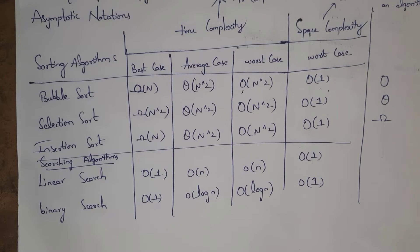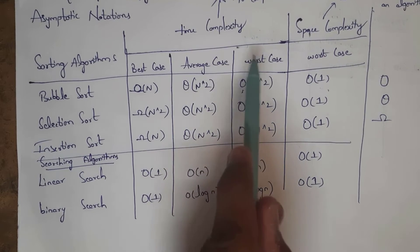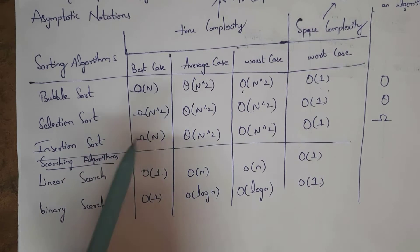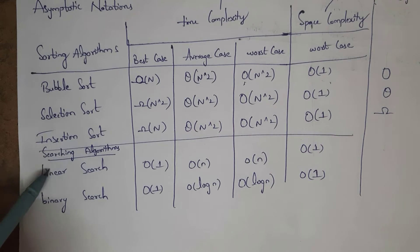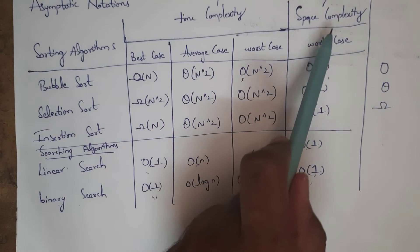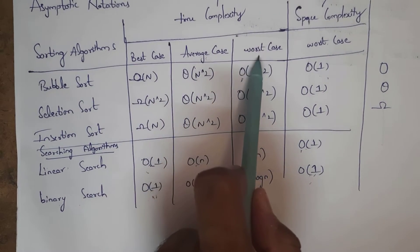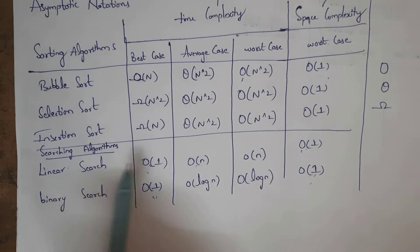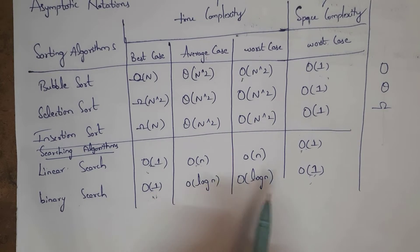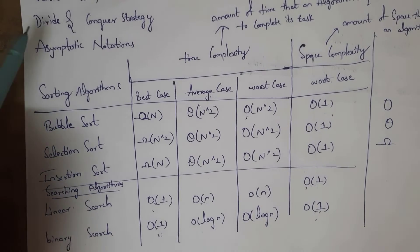Guys, this table is very easy to remember. For all three sorting algorithms, average case time complexity, worst case time complexity, and worst case space complexity are the same — you just need to remember the best case values. Best case and worst case space complexity of linear search and binary search is Big O of 1. Average case and worst case time complexity of linear search is Big O of n, and average and worst case time complexity of binary search is Big O of log n. This is an important question — you need to remember this table.